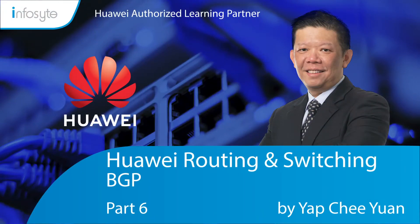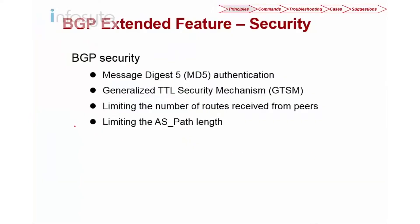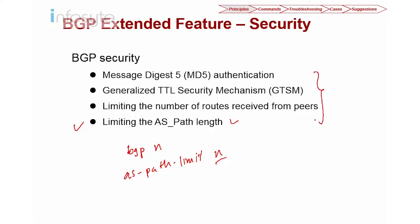Welcome back to Huawei Routing and Switching Elite Training for HCIE. Today's topic is BGP. We are going to discuss part six, specifically the limit on AS Path Length. Sometimes there is no meaning in having too long an AS Path Length. Under the BGP process, you can use the command called ASPathLimit followed by the limit value to limit the AS Path Length.